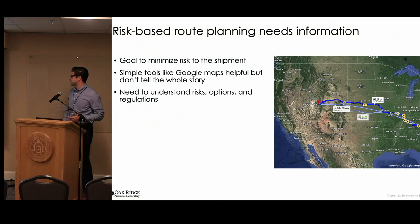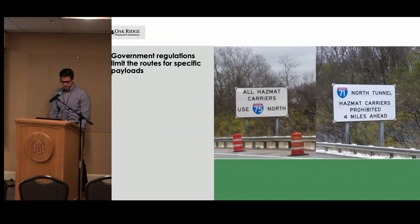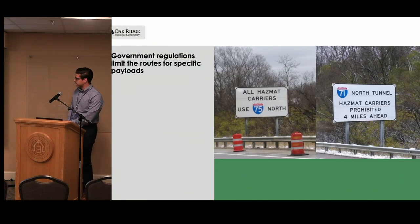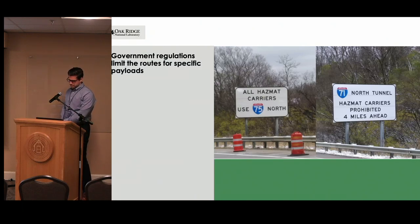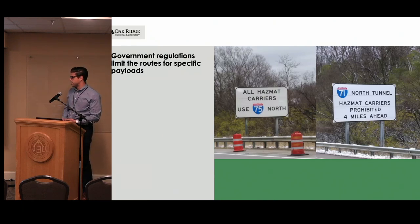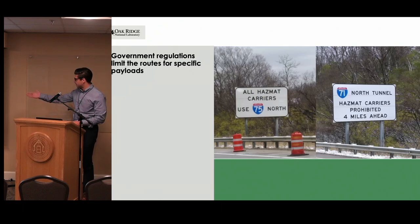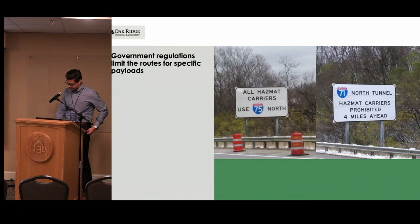We need to be able to compare routes and determine which ones are more risky than others. Government regulations limit the potential route that a specific payload can take, so we need this information in order to make correct choices about what route to take. Some signs we see along the highway: you can only use a certain highway for a hazmat carrier, or you don't want to take hazardous materials through a tunnel. Pretty logical, but that information is important for route planning.